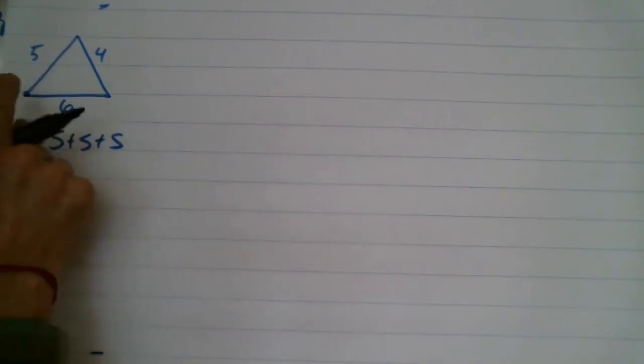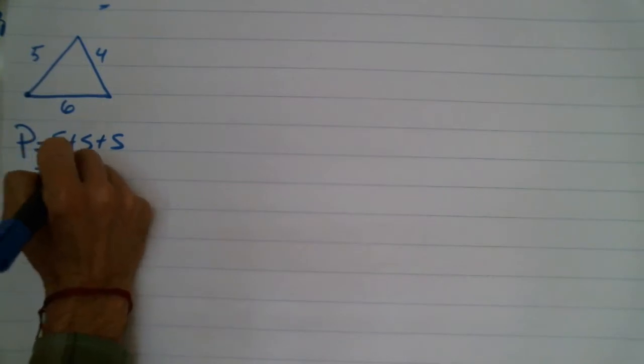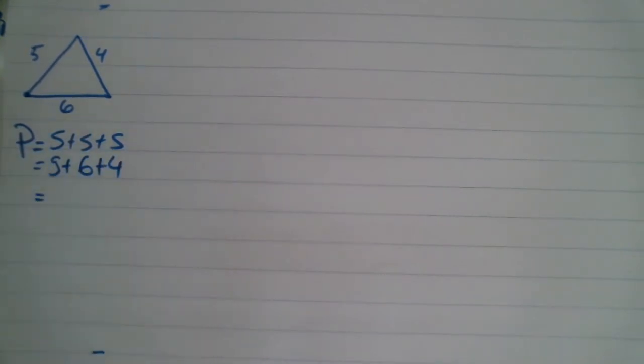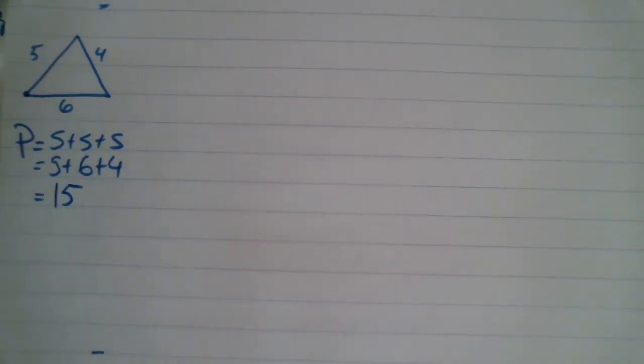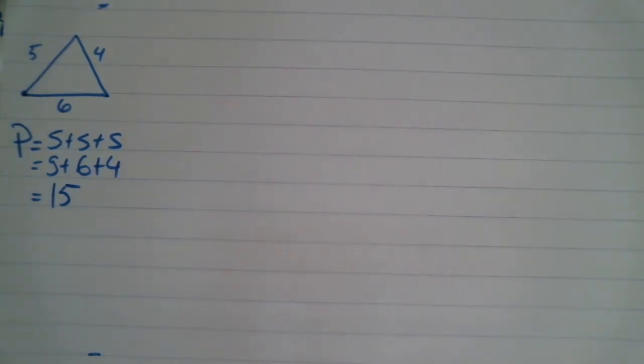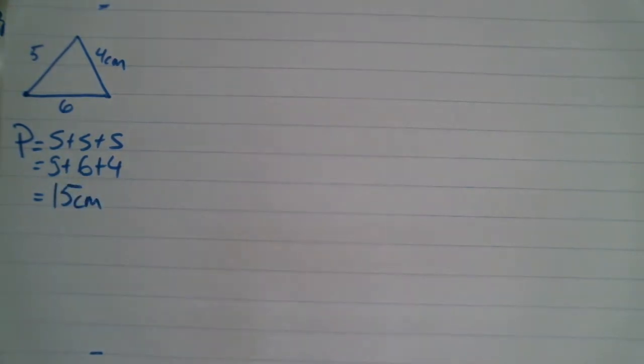My sides are going to be 5 plus 6 plus 4. This is going to be 4 and 5, 6 and 4 is 10, it's going to be 15. The perimeter of that is now done. If we had centimeters in here, I would add that in at the end.